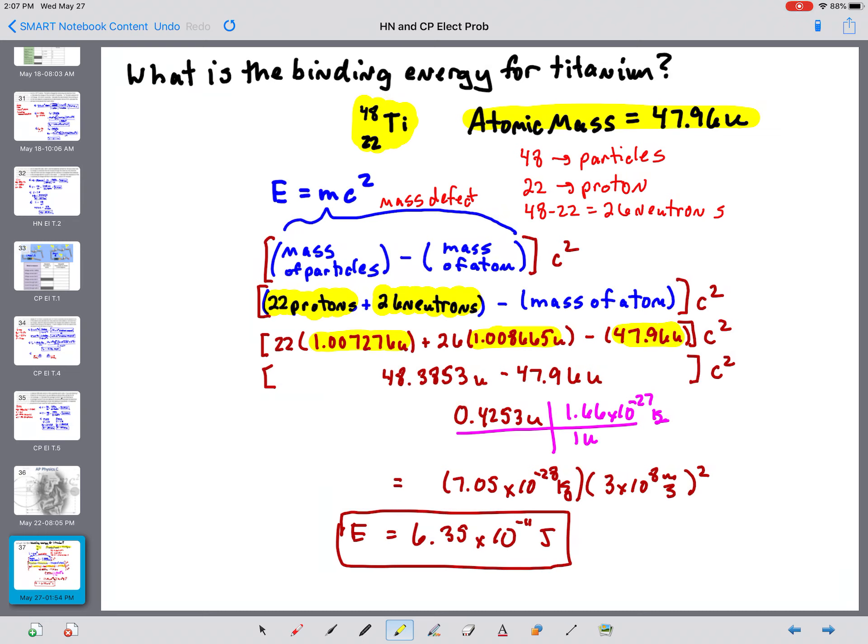So do that calculation. We arrive at the mass defect of 0.4253 atomic mass units.